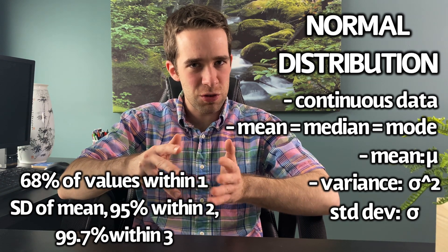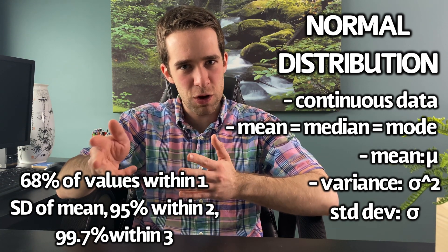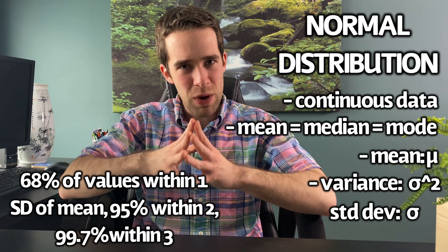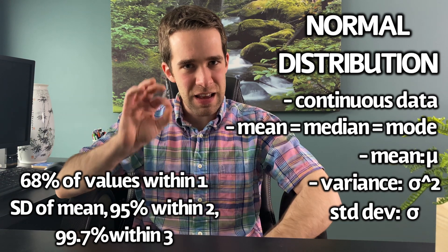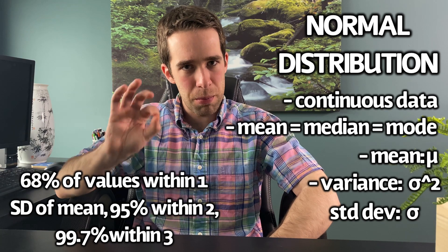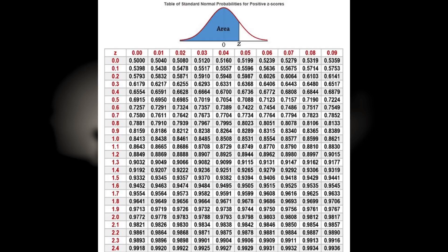Most graphing calculators or scientific calculators have this functionality built in, but when you're just getting started it is easier to use a normal probability table at first. The link to this one will be in the description, but you can find these all over the internet. It is important to know how to read these, and this will make most sense when you see an example, but let's start with just one case.